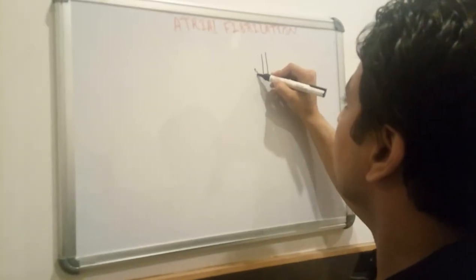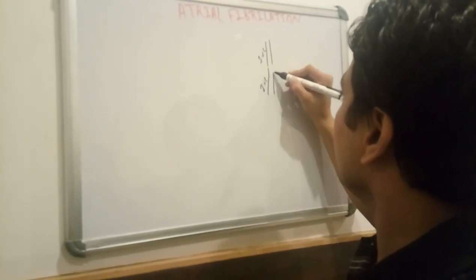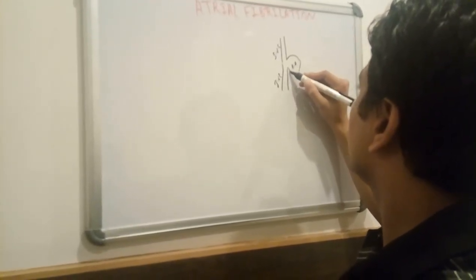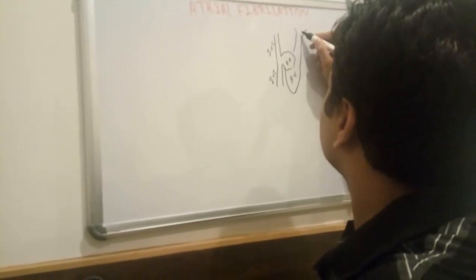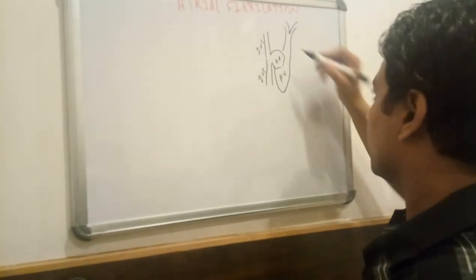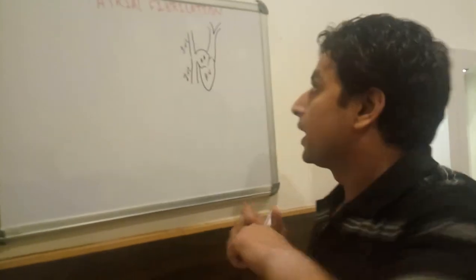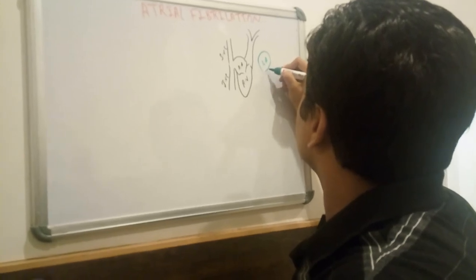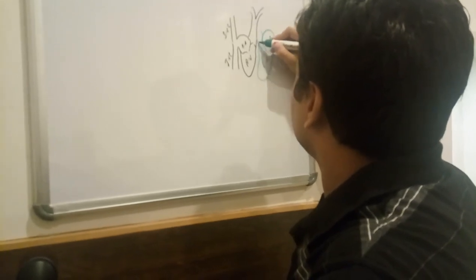Here is the superior vena cava, inferior vena cava, and right atrium. This is the tricuspid valve, right ventricle, pulmonary artery, and pulmonary valve. On the other side is the left atrium, mitral valve, left ventricle, and aortic valve.